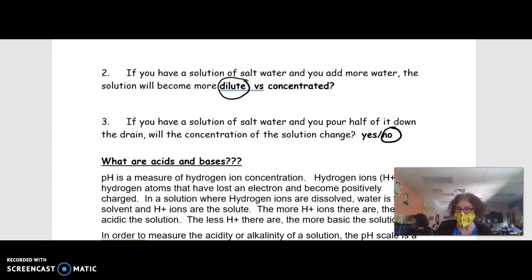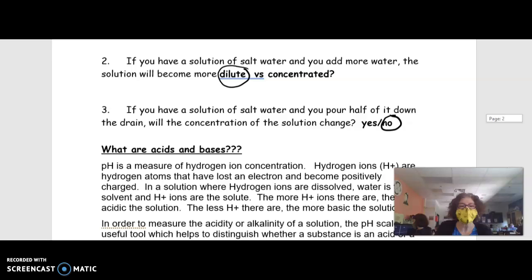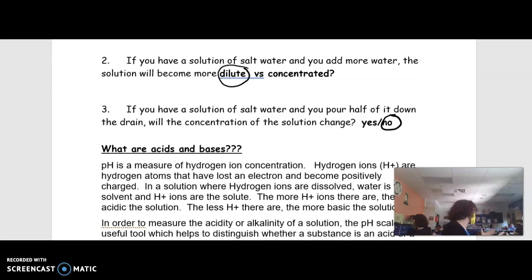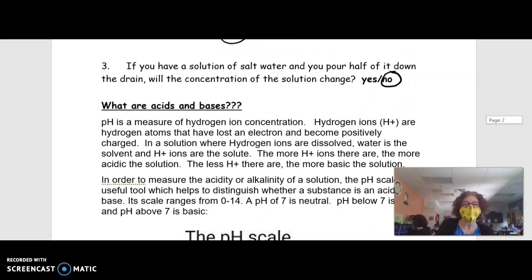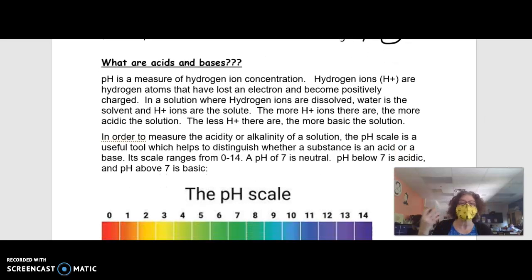Now let's move on to acids and bases. Acids and bases are a good thing to talk about when discussing solutions because all an acid or base is is different concentrations of solutions with something called hydrogen ions in them. pH is a measure of hydrogen ion concentration. A hydrogen ion is an atom of hydrogen with a positive charge on it. The more of these there are in solution, the stronger the acid. And the less hydrogen ions in solution, the less acidic and more basic the solution would be.